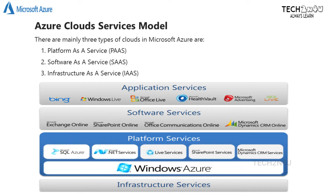1. Platform as a Service (PaaS). 2. Software as a Service (SaaS). 3. Infrastructure as a Service (IaaS). You can see the chart below to get an understanding about the services.